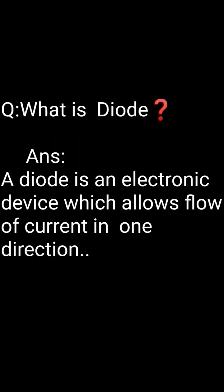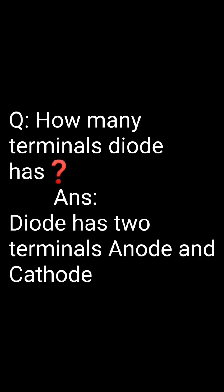Dear students, important VIVA questions in Ftriplee lab. What is a diode? A diode is a device which allows flow of current in one direction. How many terminals does a diode have? A diode has two terminals: anode and cathode.